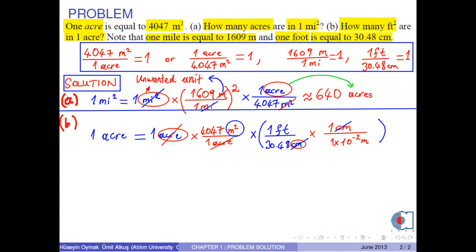And to eliminate meter squared, we take the square of this parenthesis. If you calculate, you obtain approximately one acre is 4.36 times 10 to the power 4 feet squared.